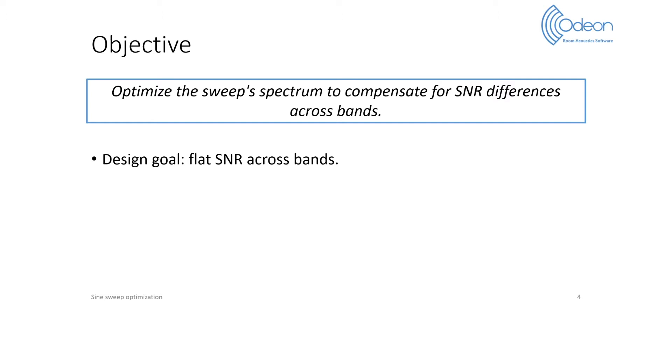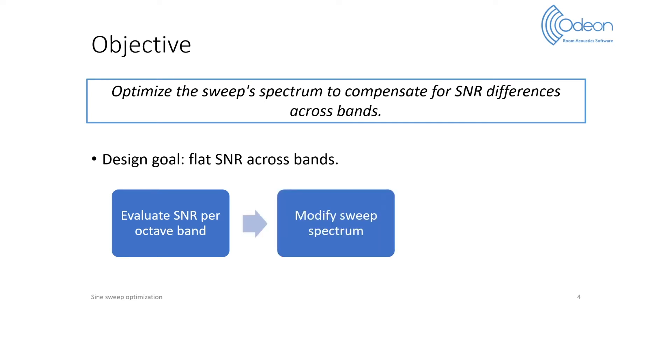So the overall idea is to first evaluate the SNR per octave band, then to modify the sweep spectrum accordingly, and finally to perform the impulse response measurement with the corrected sweep. In the rest of the presentation, I will go through some aspects of the methodology and present experimental results to validate the approach.